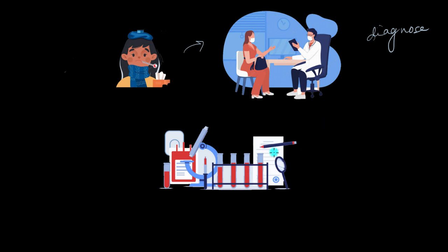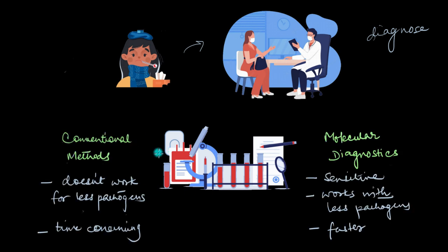Now these tests that we have, some of them are more conventional testing methods like analyzing the urine or blood samples. And those tests will detect the pathogen but only if they are present in really large numbers. Which means that the disease needs to spread up to a certain extent in your body for those pathogens to show up in your samples in large numbers.